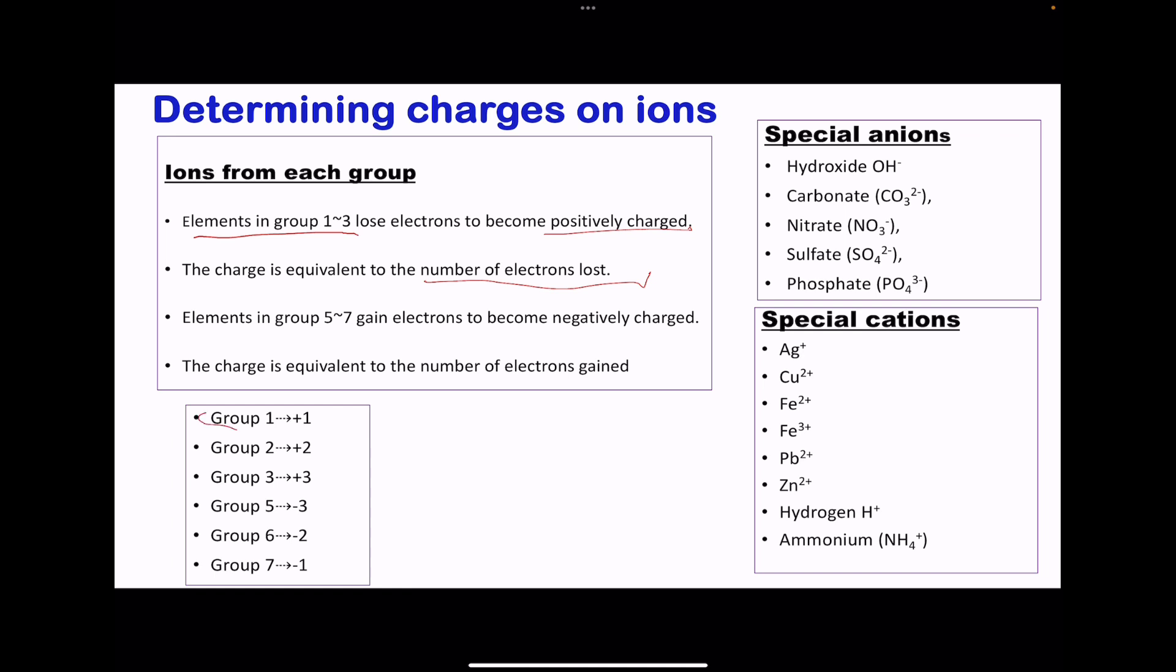Elements of group 5 to 7 gain electrons to become negatively charged. Here we see those in group 1 become +1, group 2 +2, group 3 +3, group 5 is -3, group 6 -2, and group 7 -1.